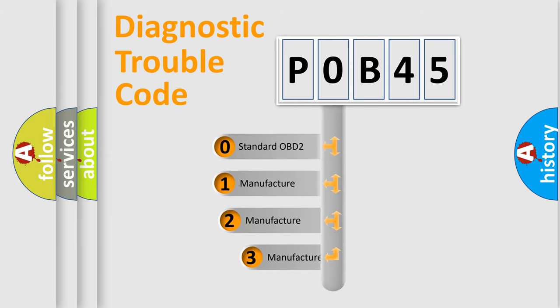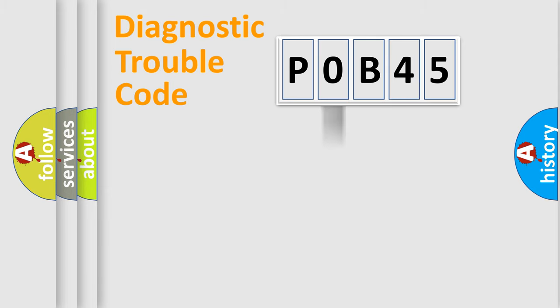If the second character is expressed as zero, it is a standardized error. In the case of numbers 1, 2, 3, it is a manufacturer-specific expression of the car-specific error.